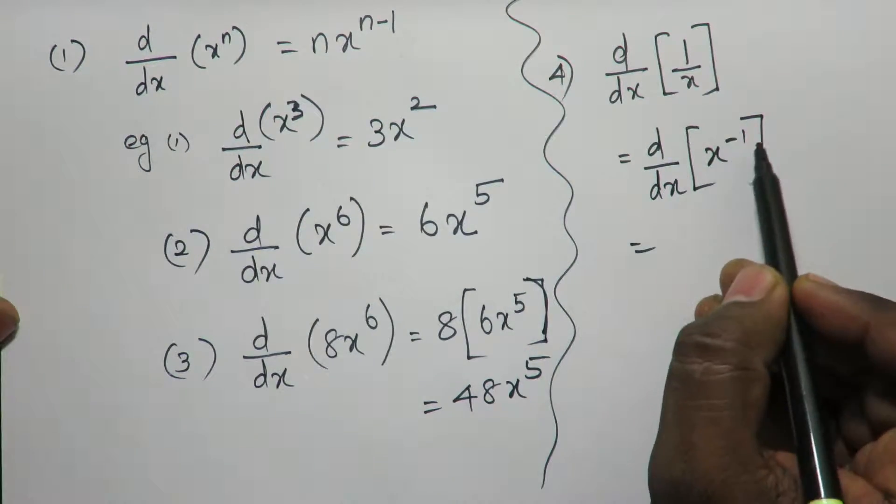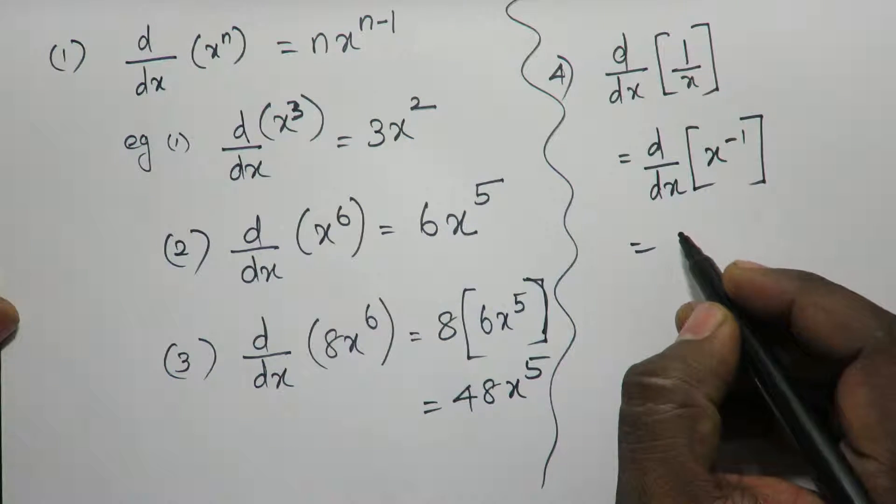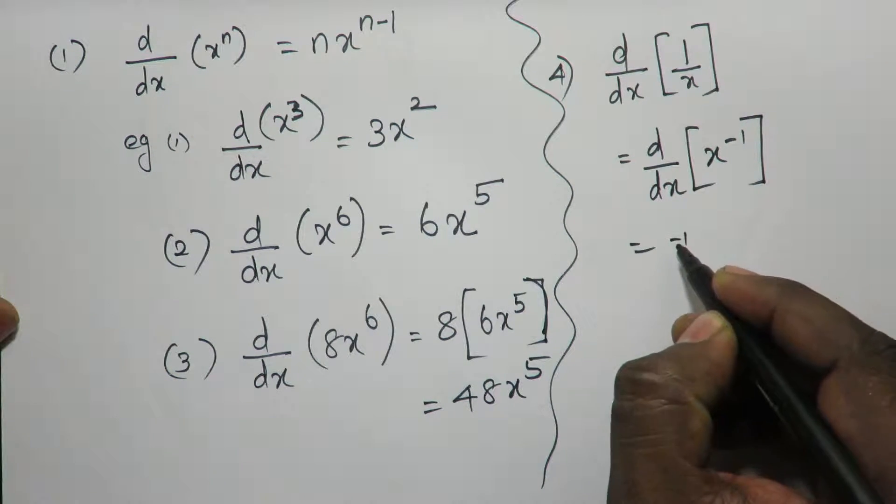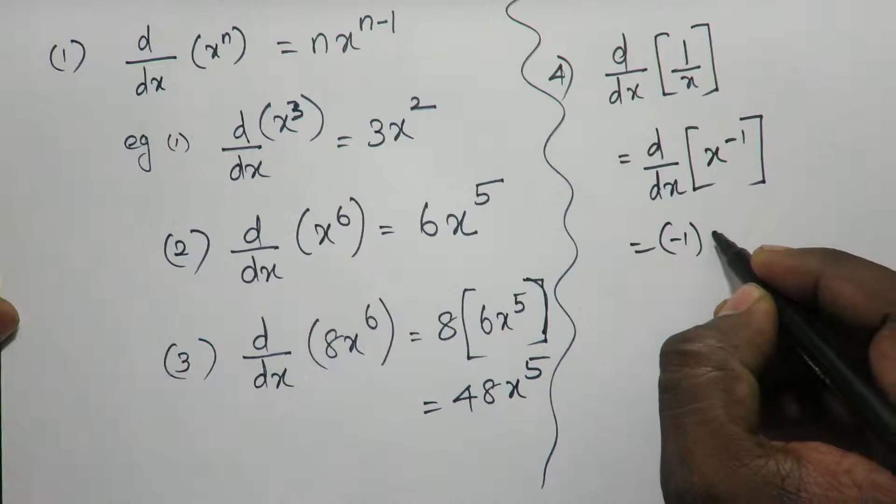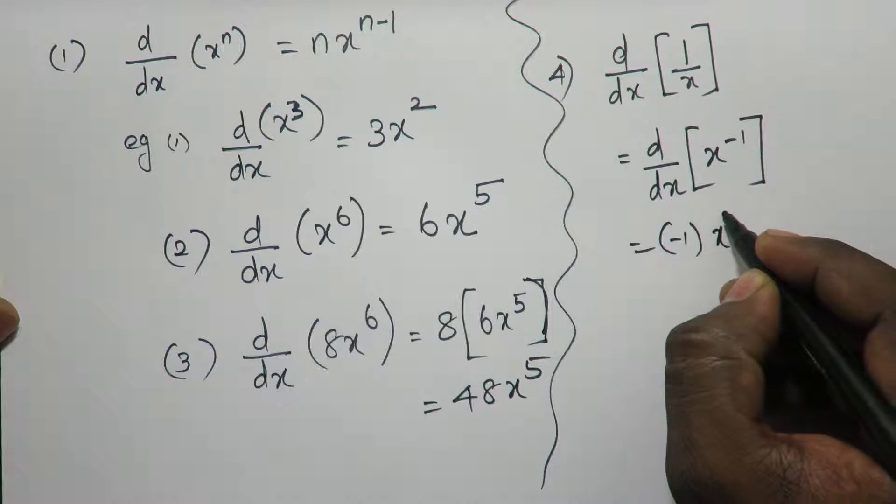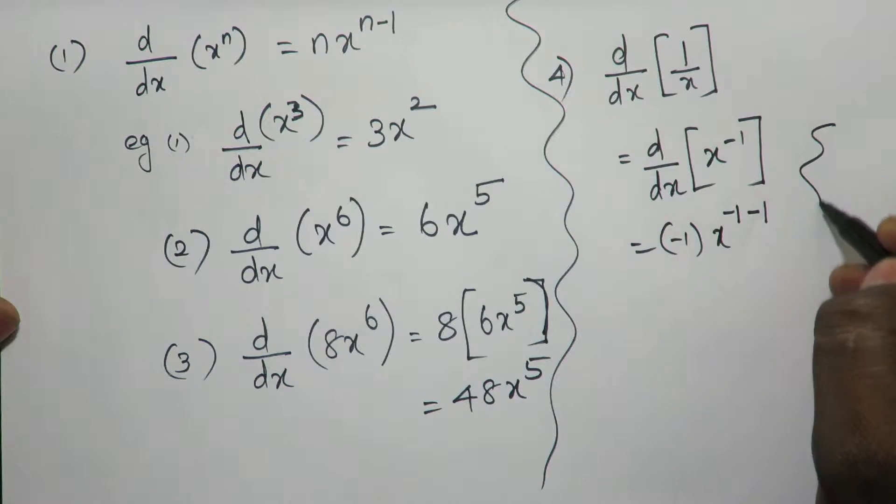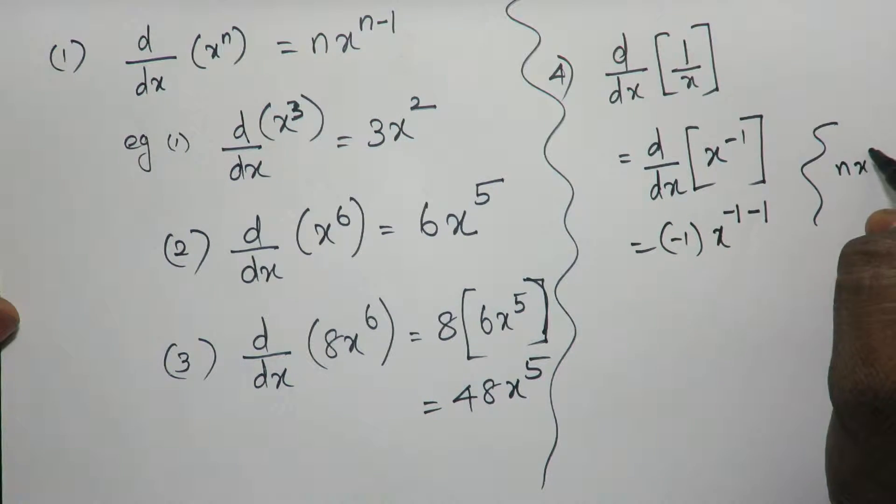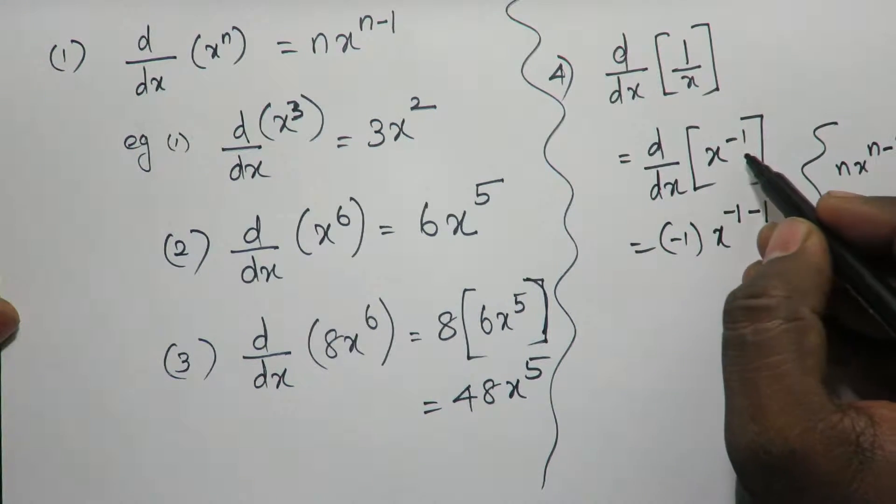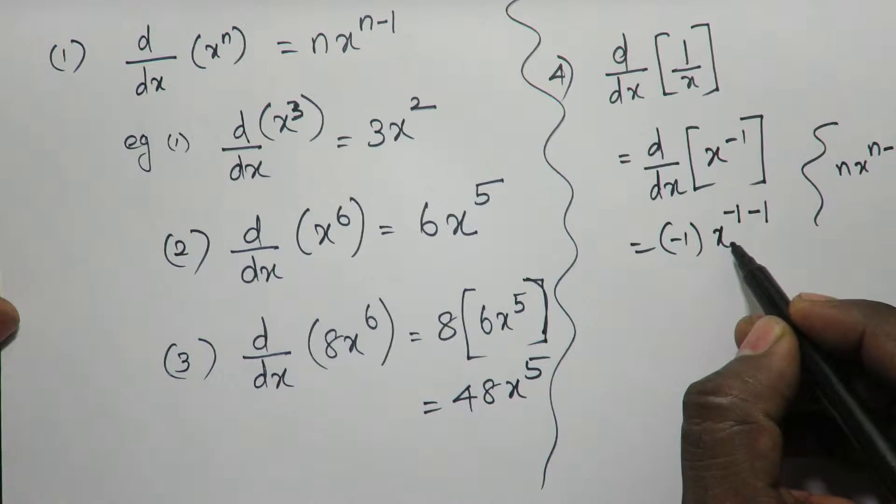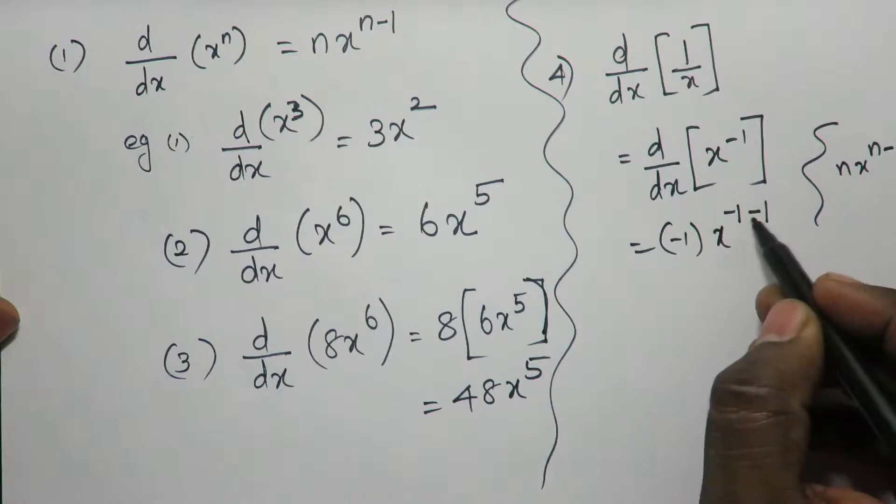So what is n here? Minus 1. So when I differentiate, minus 1 x power minus 1 minus 1. What is the formula? n into x power n minus 1. n is minus 1, so minus 1 x power minus 1 minus 1.